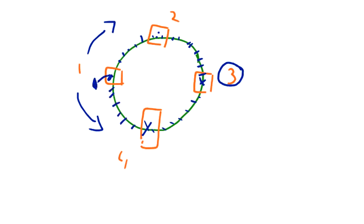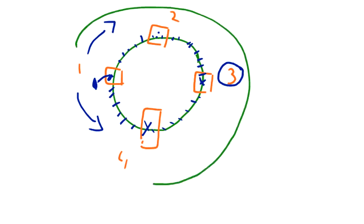At the same time, a packet may also flow to computer four and then come back to computer one, where it is terminated. So in the ring network, the packet flows from the source and its final destination is also the source, but in the meanwhile it reaches its intended computer.